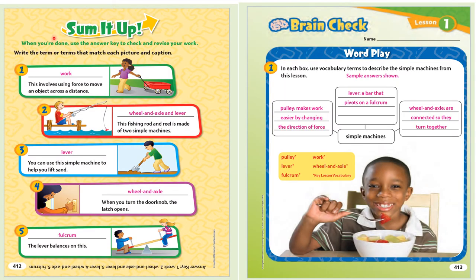Sum it up. When you're done, use the answer key to check and revise your work. Write the term or terms that match each picture and caption. 1. This involves using force to move an object across a distance. 2. This fishing rod and reel is made of two simple machines. 3. You can use this simple machine to help you lift sand. 4. When you turn the doorknob, the latch opens. 5. The lever balances on this.